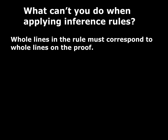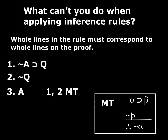First: whole lines in the rule. By that I mean, if you look at the schematic for a rule, the parts have to correspond to whole lines in the proof. For example, looking at three imaginary lines from an example proof, someone is using modus tollens on lines one and two to get A. We have a conditional, the negation of the consequent, and we infer the antecedent. This is totally fine.